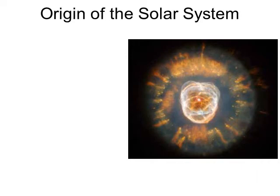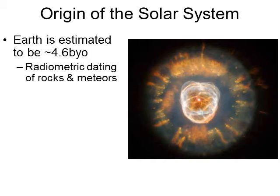Before we go into life on Earth, let's go over the general way in which solar systems form. The Earth is believed to be about 4.6 billion years old — BYO means billion years old. This number has been reached numerous times by a method of radiometric dating, which we talked about earlier in this chapter.